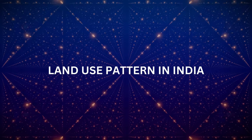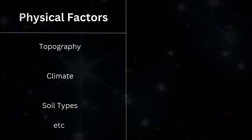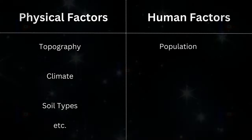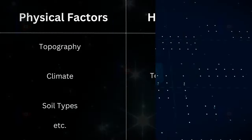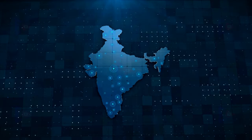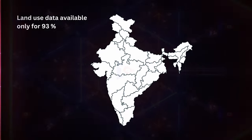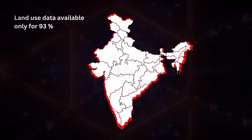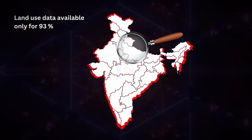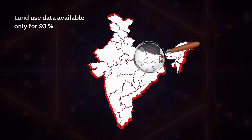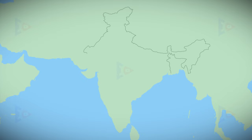Land use pattern in India is determined by both physical factors (topography, climate, soil type) and human factors (population density, technological capability, culture and traditions). Total geographical area of India is 3.28 million square kilometres. Land use data is available for only 93% of the total area because land use reporting for most north-eastern states except Assam is incomplete, and some areas of Jammu and Kashmir occupied by Pakistan and China have not been surveyed.